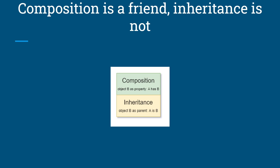The more you use inheritance and the bigger your inheritance trees get, the more you'll be tied down and the harder to maintain your code will get. The Liskov Substitution Principle says that children objects must be able to replace parents in an application. When you find that you are starting to break this principle and are throwing not-implemented exceptions in your inherited methods, you have gone too far with inheritance.